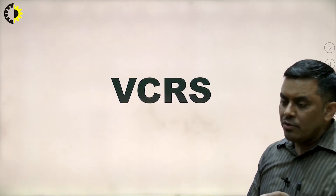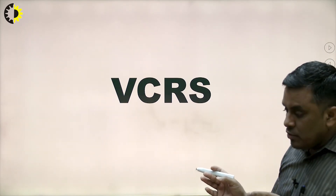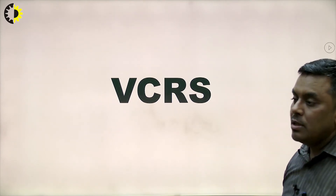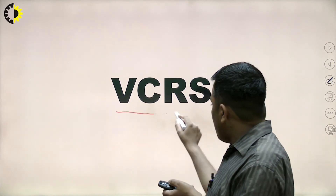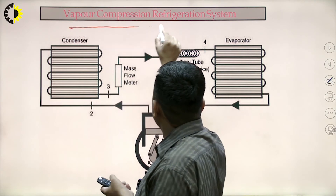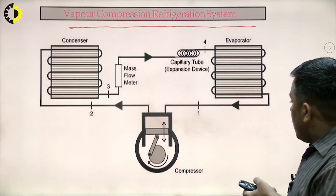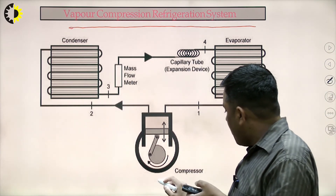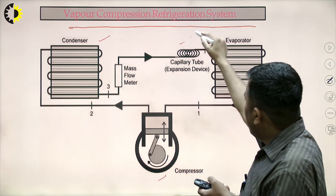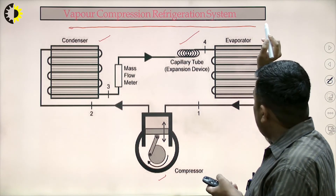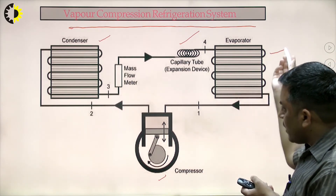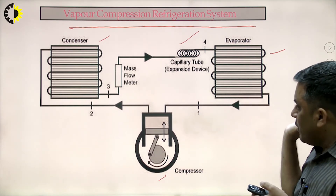T1 has certain limitations because phase transformation does not occur in air refrigeration. So it does not fully fulfill the purpose of cooling in some regard. To overcome the limitations of the air refrigeration system, a more advanced form is used — the VCRS, Vapor Compression Refrigeration System. The main components are basically the same: compressor, then condenser, then an expansion device — here a capillary tube or expansion device instead of a turbine — and an evaporator.